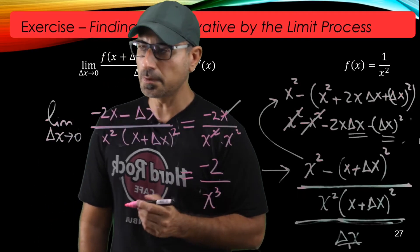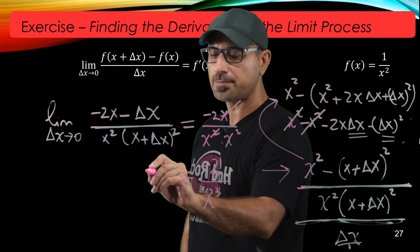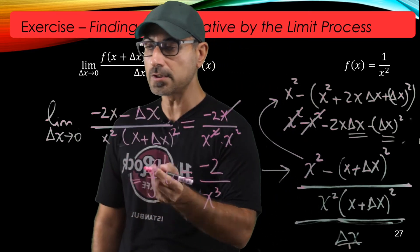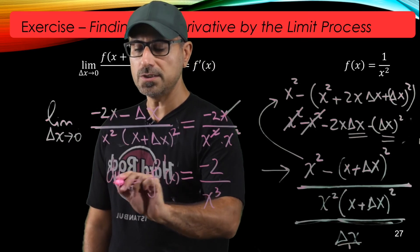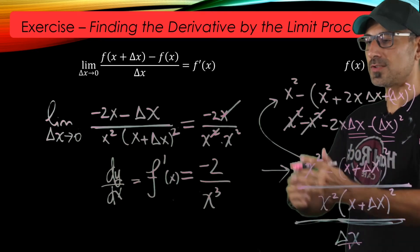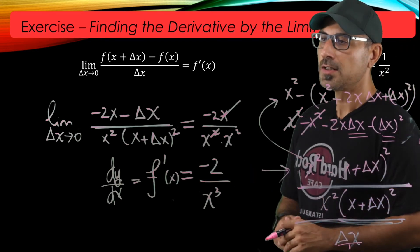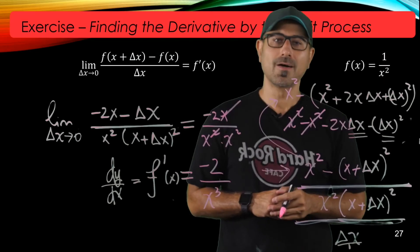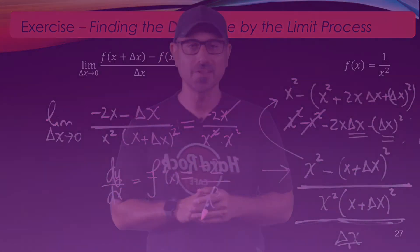So this implies that f prime of x, or with the other notation dy over dx, is exactly equal to negative 2 over x cubed. This is the derivative of the function 1 over x squared. All right, thanks for watching. This is the end of the video.